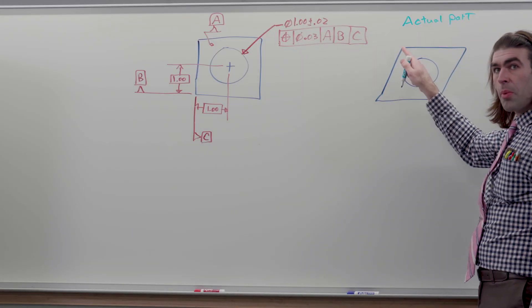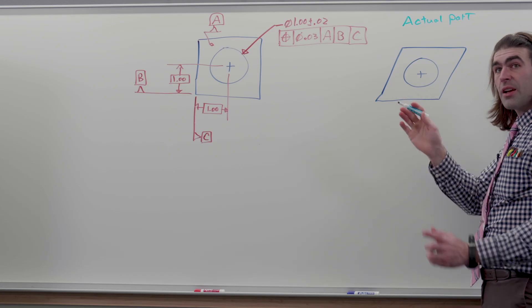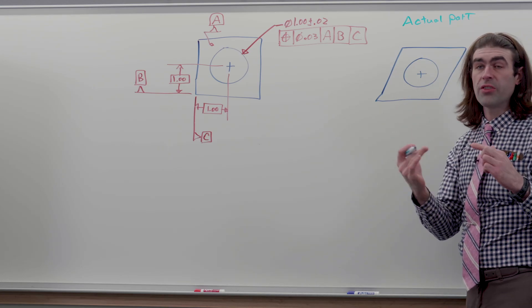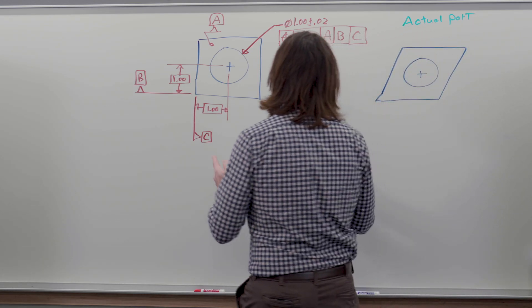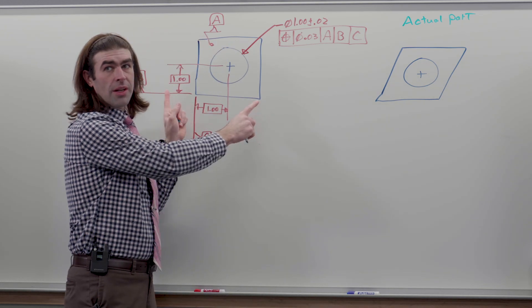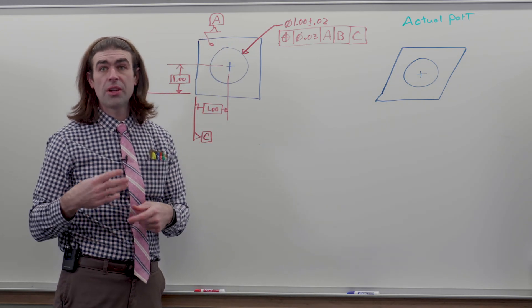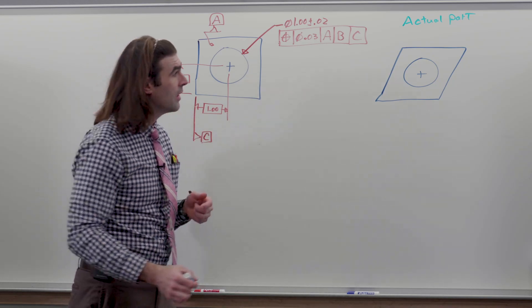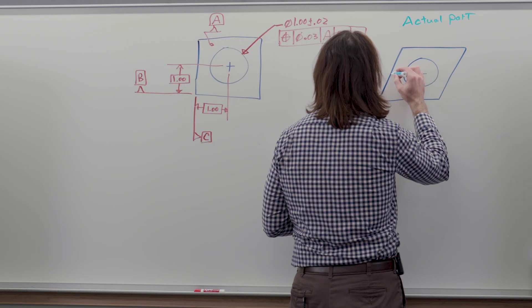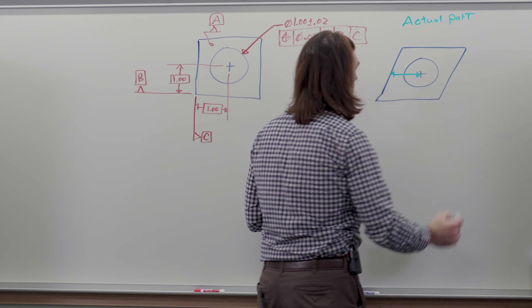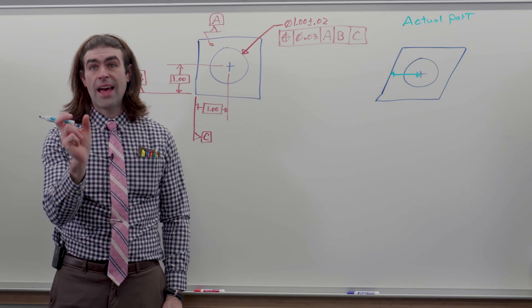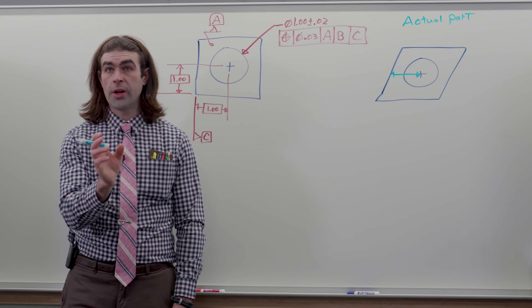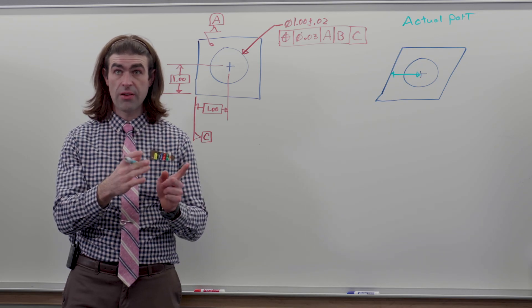So if our actual part looks like this, it comes out a little off, which is okay. I didn't put the limits of size here, but it would have some kind of size dimension and potential variation. So this is just an exaggerated view. If we measure from the edge of the actual part to the hole, we're going to get one number, whatever it is.